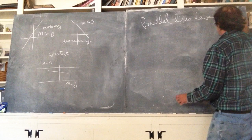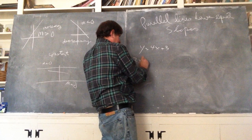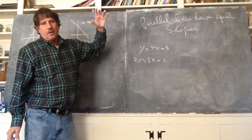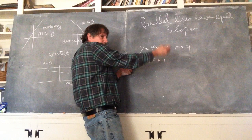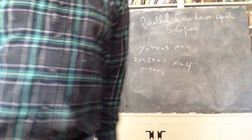Equal slopes. You make it. y equals 4x plus 3 and 2y equals 8x plus 1. They're parallel. Because here the slope is 4. And here, if I divide by 2, 4x plus a half, the slope is 4. They're parallel lines. The slope of either one of them is 4.